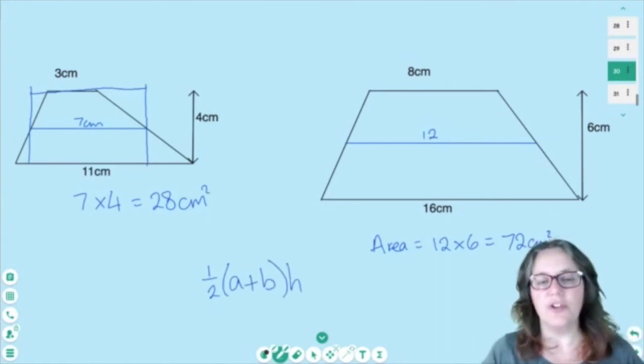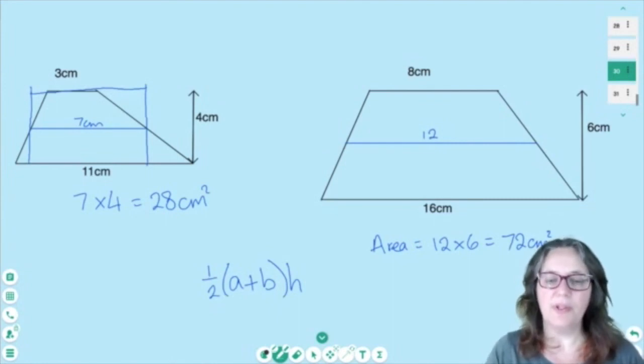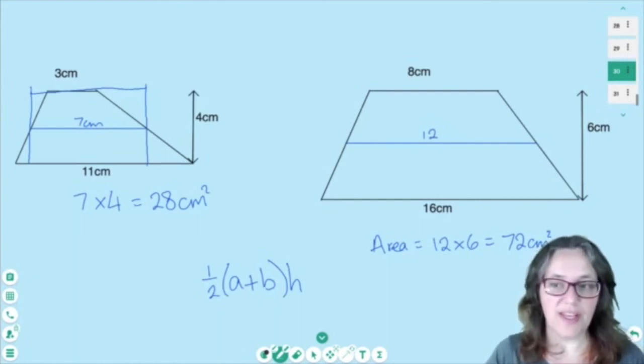But when people look at this formula, they often go, what do you mean by a? What do you mean by b? What's going on with this? Well, that half (a + b) is just there to work out your average length. And if you get that in your head, then the formula becomes a lot easier to remember.